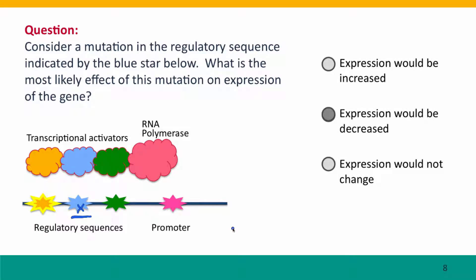The most likely consequence is that expression is going to go down, because the most likely consequence of changing the sequence of a regulatory binding site is that the protein is not going to bind there anymore. It won't recognize the site because the sequence has changed, and that's going to interfere with activation of transcription.